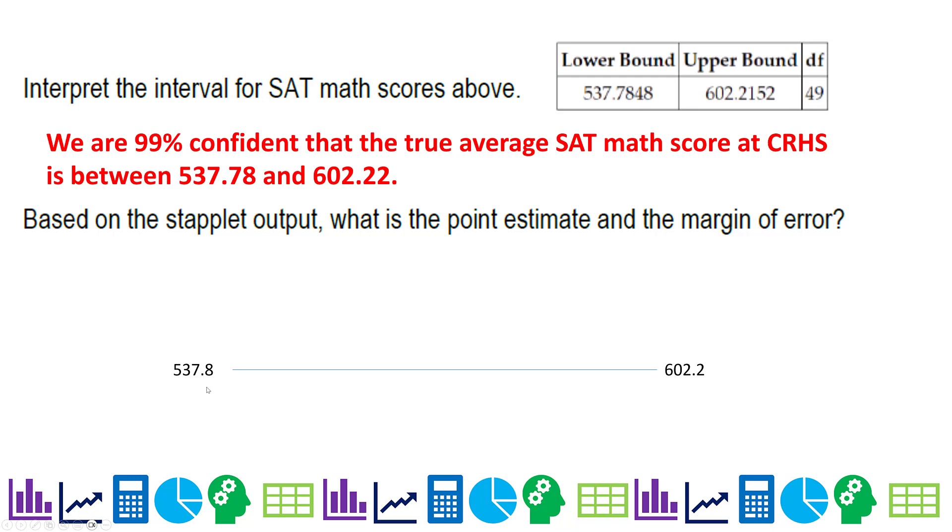So in fact, you can see I rounded a little bit here. So based on the staplet output, what is the point estimate and the margin of error? I'm using a little number line to show the lower and the upper bounds on my interval. The point estimate is the midpoint. It goes right there. So it needs to be halfway. For me, the easiest thing to do is just average these two. Add the 537.8 and the 602.2 divided by two and we get 570.